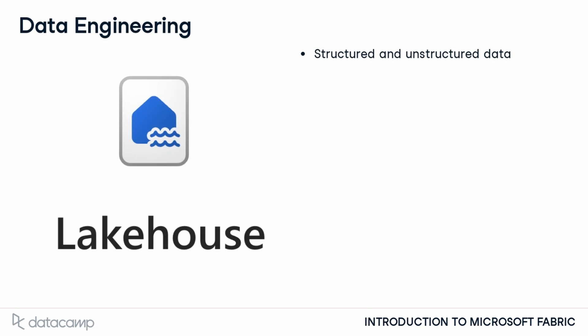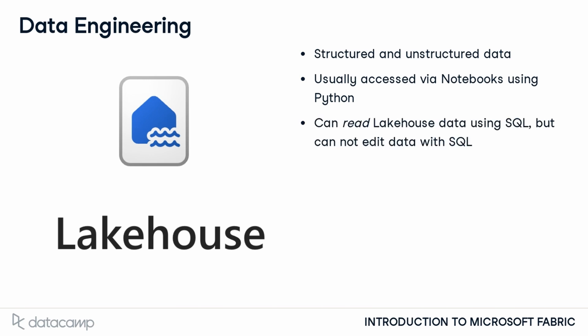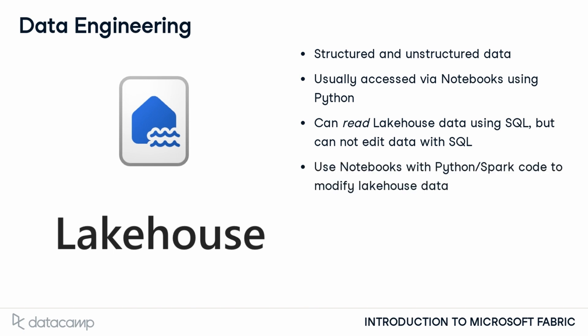Finally, let's discuss the Data Engineering experience, focusing on the lake house. Like a warehouse, a lake house is a storage option within Fabric, but unlike a warehouse, lake houses support both structured and unstructured data. Developers typically interact with lake houses using notebooks and Python code, using packages like PySpark to transform and analyze data. While SQL can be used to read data in a lake house, write operations are not supported, requiring Spark for data modification. Developers familiar with Python and Spark tend to use lake houses, while heavy SQL users might prefer a warehouse. Data in lake houses is also stored in OneLake as Parquet files, making it accessible to other users in the Fabric workspace.